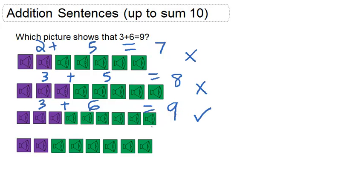So this is the correct answer. Let's just look at the last answer and make sure that it's not correct. 2 purple speakers plus 1, 2, 3, 4, 5, 6 green speakers equals 8.